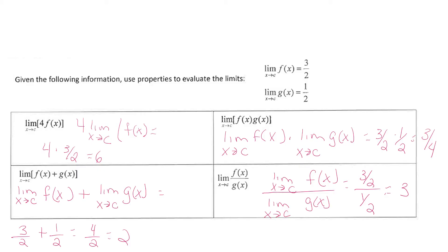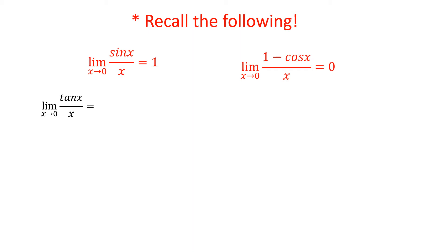Now these may seem really simple, so let's look at some more problems where we're going to have to use the properties of limits, and also probably some properties of trig as well. Let's start with the limit as x approaches 0 of tan(x) over x. If we do direct substitution, the tangent of 0 is 0, and then you have 0 on the bottom, so you have 0/0 — it's indeterminate.